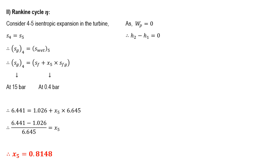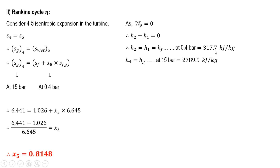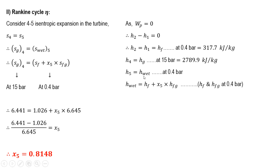The pump work is given as h2 − h1 = 0, so h2 = h1. Since point 0.1 lies on the saturated liquid curve, h1 = hf at condenser pressure = 317.7 kJ/kg. Point 0.4 lies on the dry saturated curve, so h4 = hg at boiler pressure (15 bar) = 2789.9 kJ/kg. Point 0.5 lies in the wet region at condenser pressure, so h5 = h_wet = hf + x5 × hfg = 317.7 + 0.8148 × 2319.2 = 2207.612 kJ/kg.